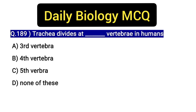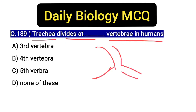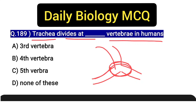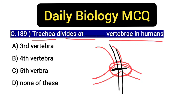Hello everyone, welcome to our live online classes. This is Praveen here. Today's MCQ for biology is: trachea divides at which vertebra in the human vertebral column? The vertebral column has different portions such as thoracic and cervical, which we usually call vertebrae or backbone. The trachea divides in your respiratory system — when you study the respiratory system, you will see that trachea divides into primary bronchi, positioned behind the backbone. The question is: at which number of vertebrae does it divide?